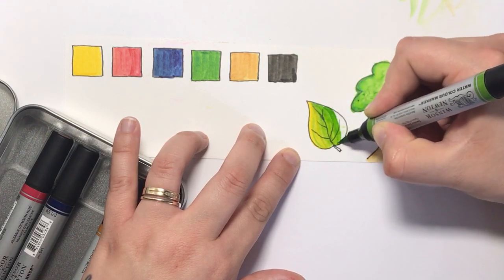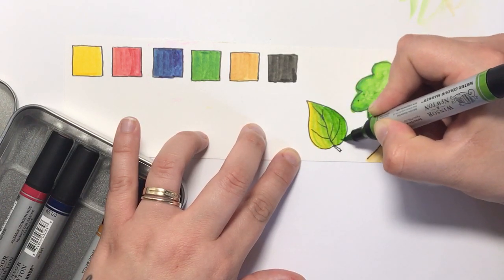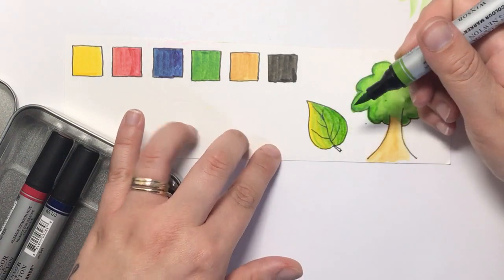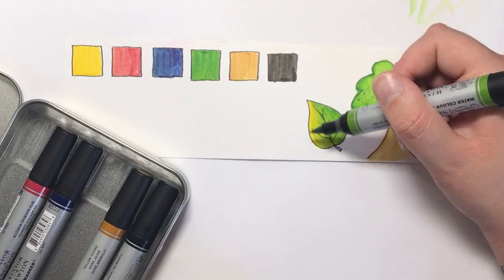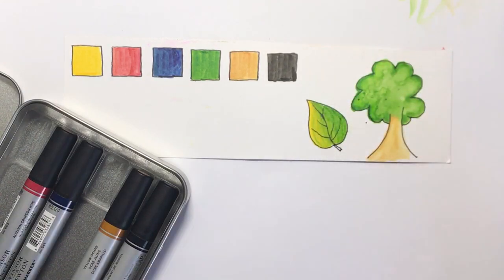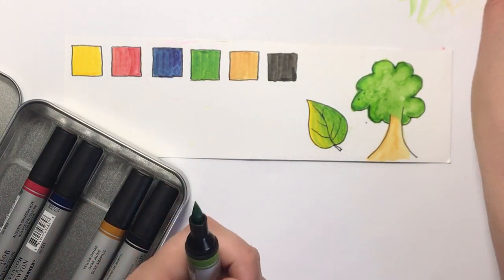As you can see, it gradiates down into the original colour and just looks really effective. Now obviously you can spend more time with your strokes so that it doesn't look as streaky. But it's really effective and it's super easy.